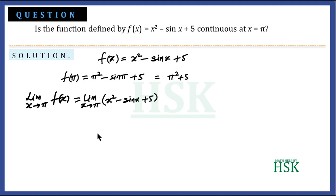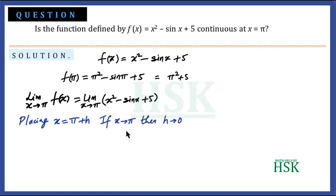For that, we place x = π + h. If x tends to π, then h tends to 0, because placing x = π gives π = π + h, so h = 0. This means that as x becomes very close to π, h tends to 0.